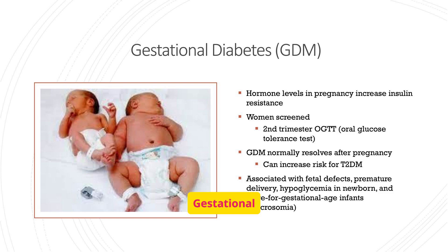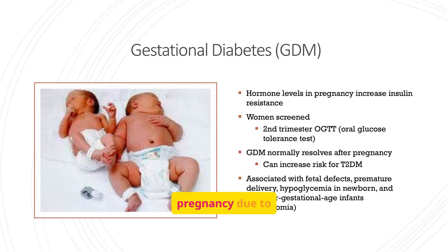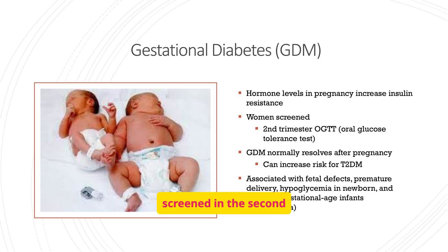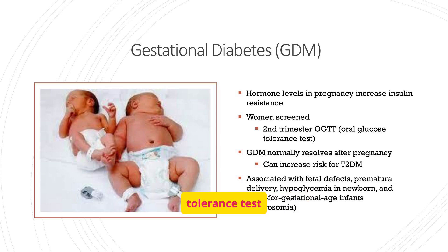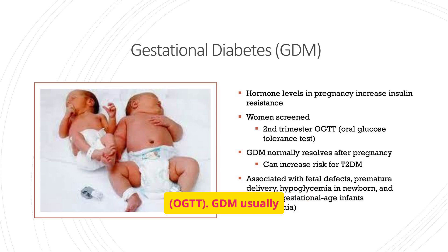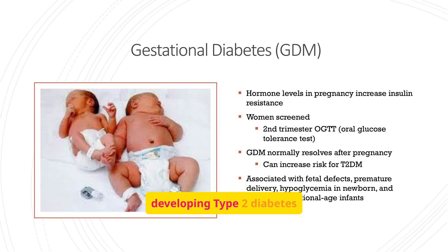Gestational diabetes, GDM, occurs during pregnancy due to increased insulin resistance. Women are screened in the second trimester with an oral glucose tolerance test, OGTT. GDM usually resolves after pregnancy, but increases the risk of developing type 2 diabetes later in life.